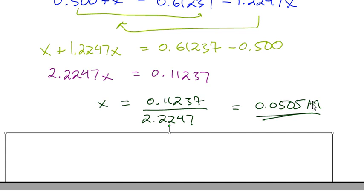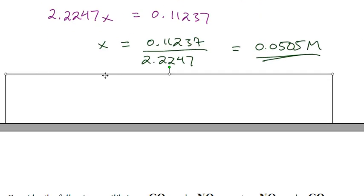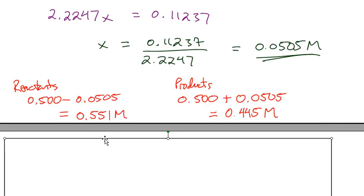That number is not our final answer — leave it unrounded in the calculator. This is our change, our x. We plug it back into the ICE table and solve for what we're asked. The reactants were 0.500 − x, giving a final answer of 0.451, rounded to the correct number of significant figures.